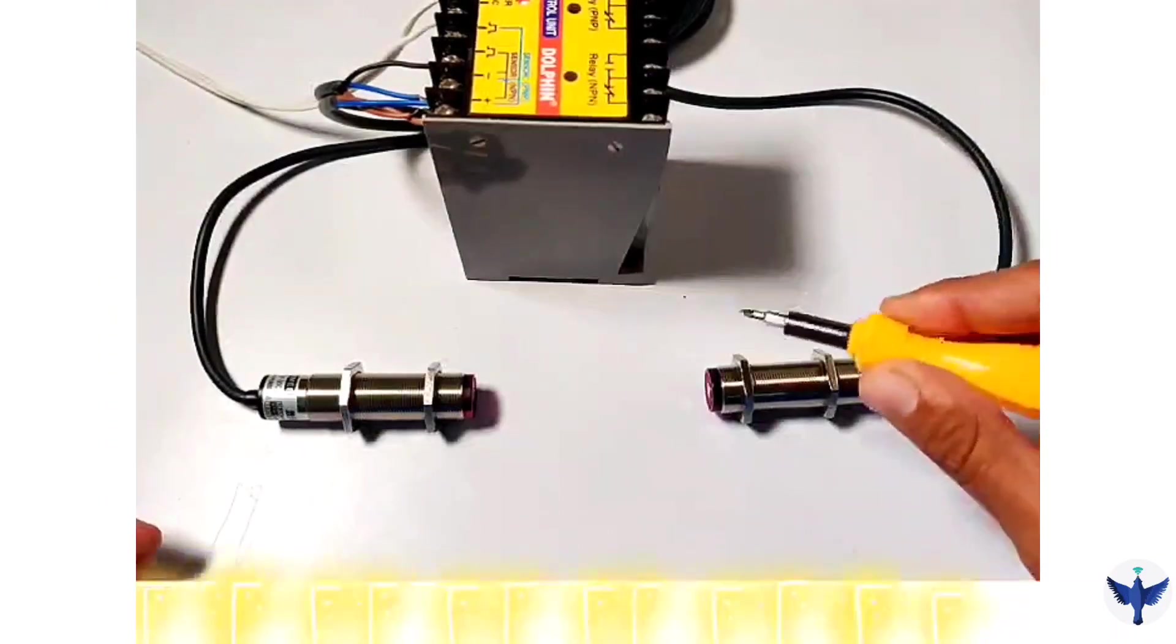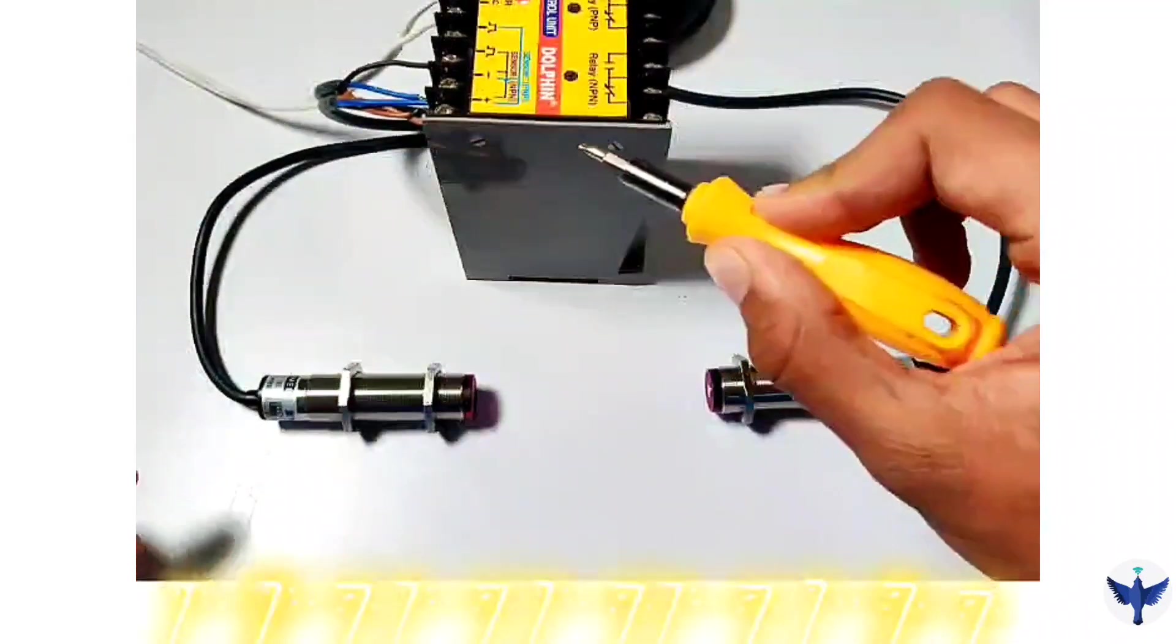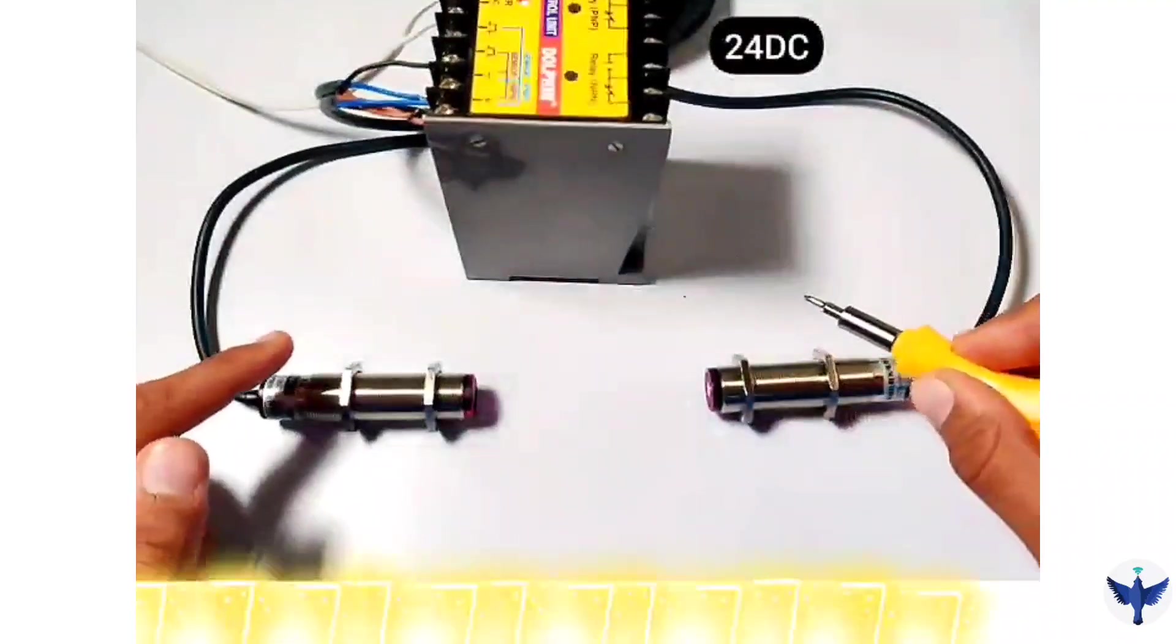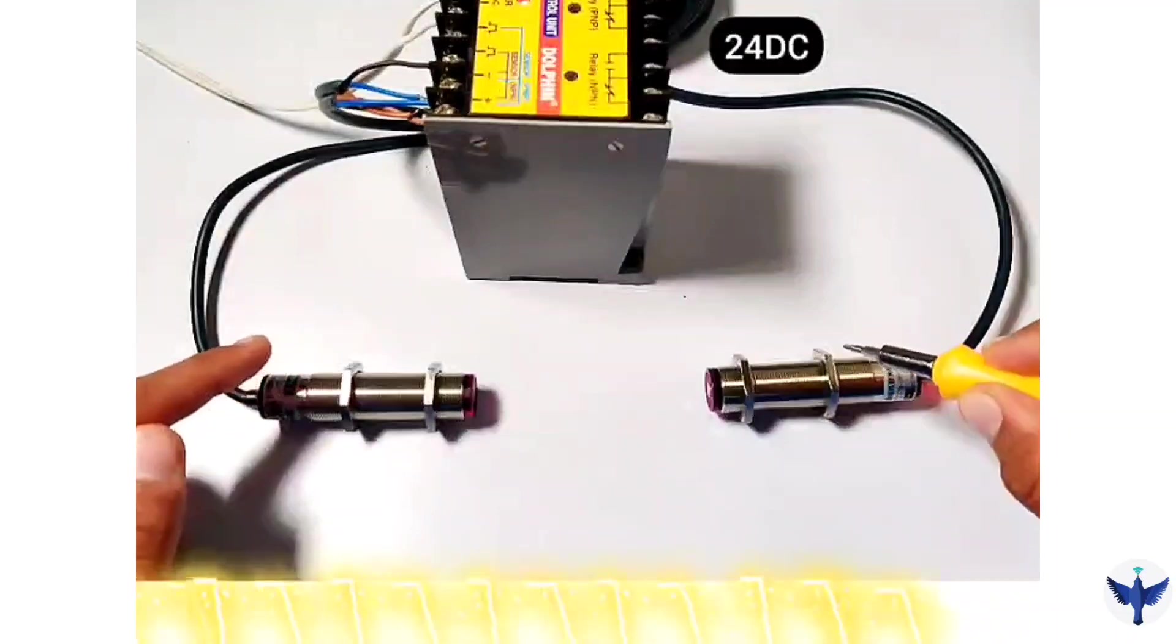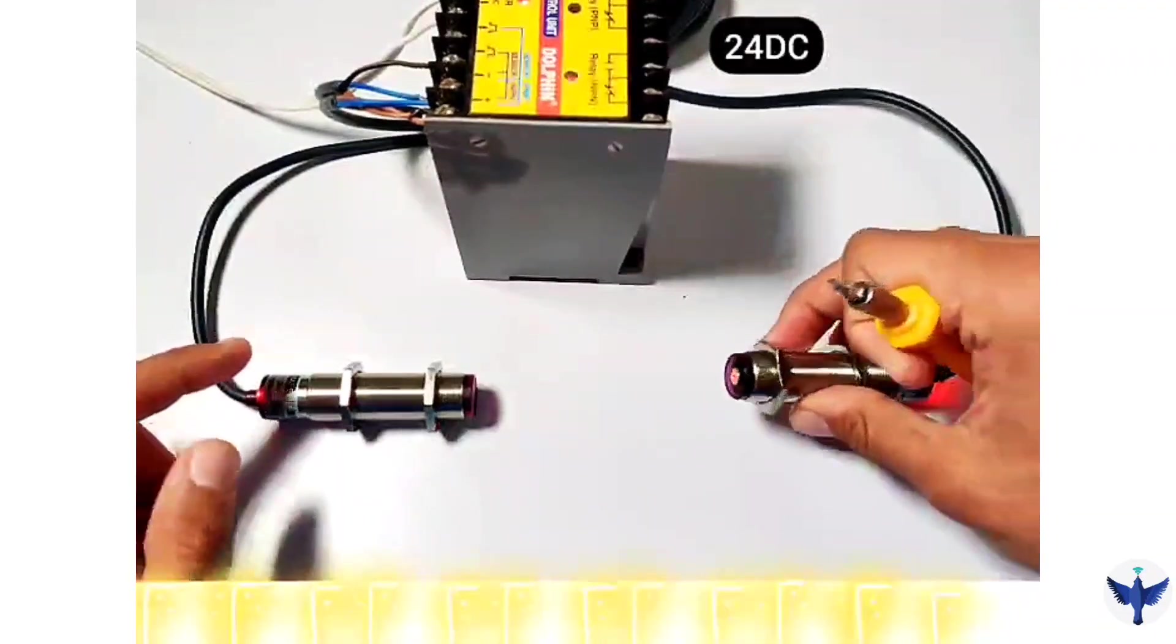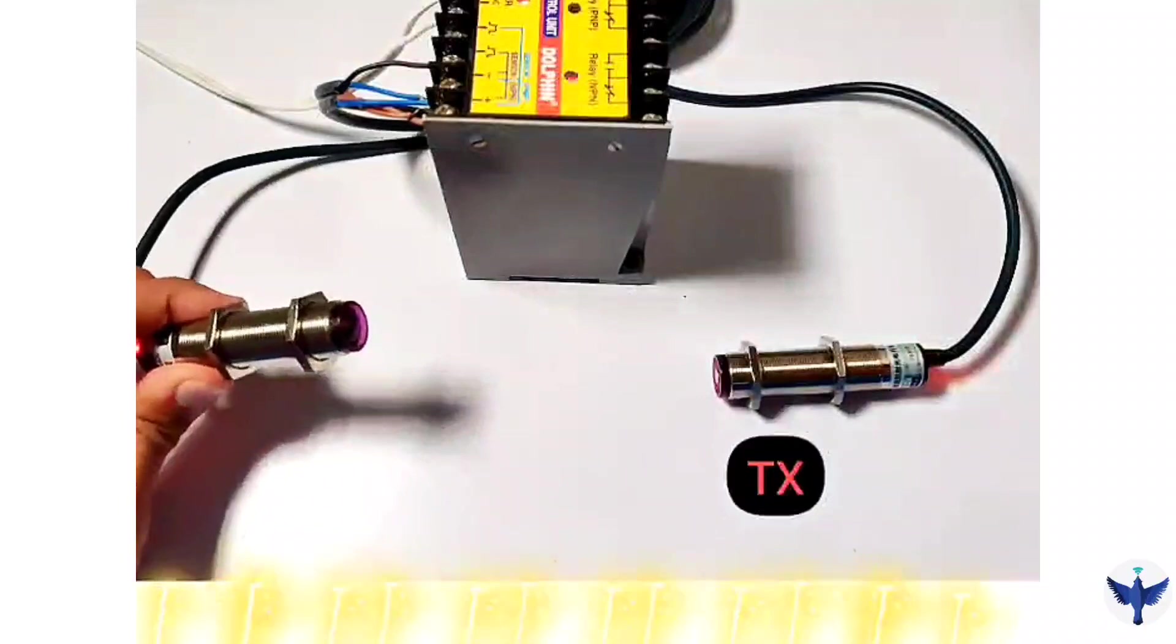So here is my industrial sensor and here is my power supply which is giving 24 volt DC to both of these sensors. One is the transmitter of the laser. Here you can see the transmitter of the laser and here is the receiver of the laser.